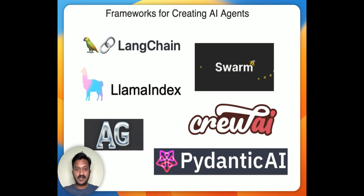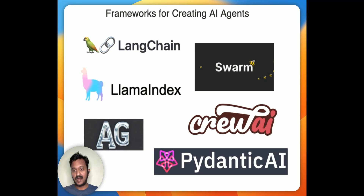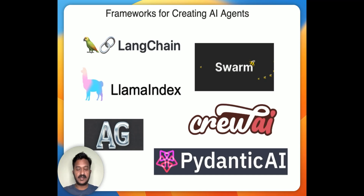Everyone today is talking about agentic applications, building agentic workflows, agentic RAG workflows, and all that. Why not? Because every company today wants to be an AI company and use modern approaches to software development and engineering. Creating AI agents and agentic workflows have become the forefront and a really important topic in the AI industry today.